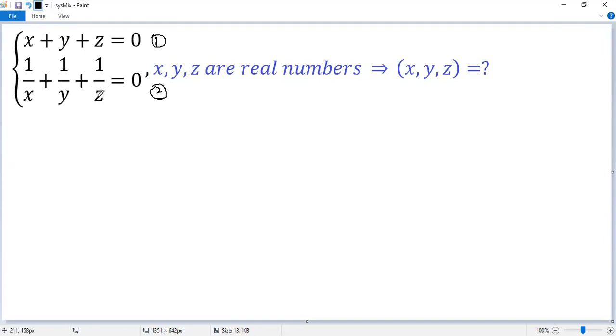Let's look at equation 2 first because x, y, z are all at the bottom. So they should be non-zero. So from equation 2 we get x non-zero, y non-zero, z non-zero. We denote this one as condition star.